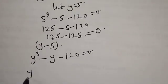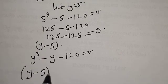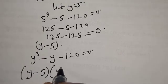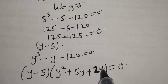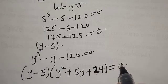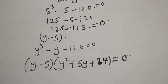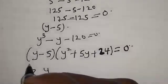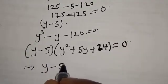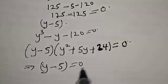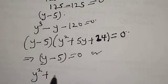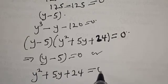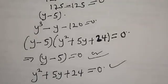Then we have y minus 5 multiplied by y squared plus 5y plus 24 is equal to 0. This implies that y minus 5 equals 0, or y squared plus 5y plus 24 equals 0. So we have two cases now.